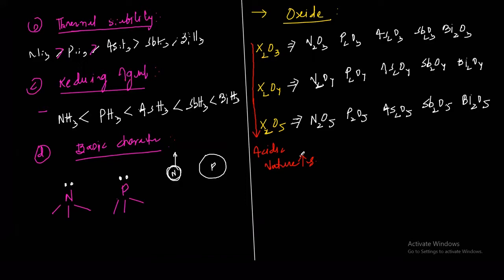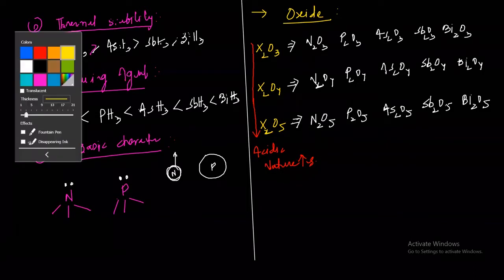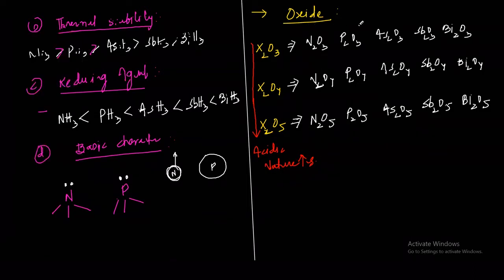For N₂O₃, P₂O₃, As₂O₃, Sb₂O₃ — going down the group for a particular type of oxide — acidity decreases. The tendency to accept electrons is less because electronegativity is less. So for a particular oxide type going down the group, acidic behavior decreases. For oxides of the same element, as percentage oxygen character increases, acidity increases.